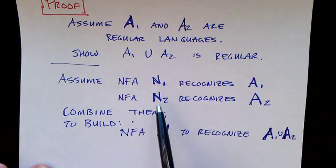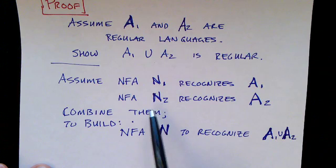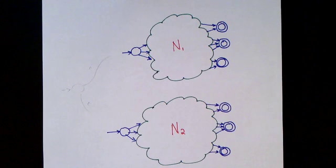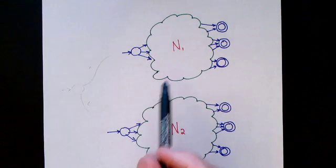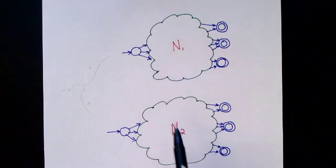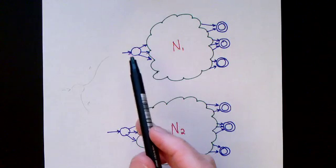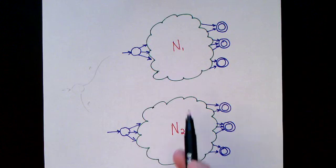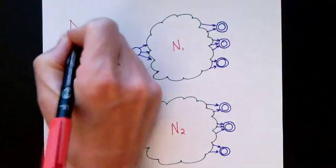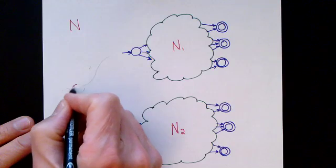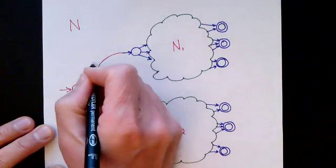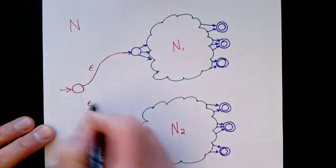What we're going to do is combine N1 and N2, these two machines, and build a new machine N that will recognize the union of A1 and A2. Our proof is a proof by construction. Here we have shown schematically our two machines N1 and N2. There's a starting state for each one, and each may have some final states. We construct a new machine N to recognize the union by creating a new starting state and adding epsilon transitions. This new machine is also non-deterministic.